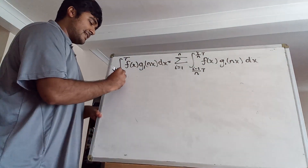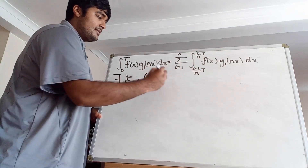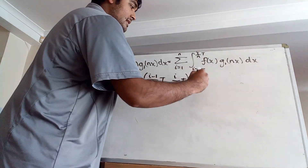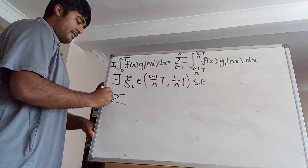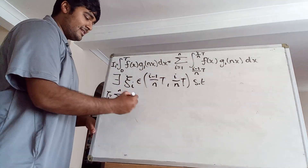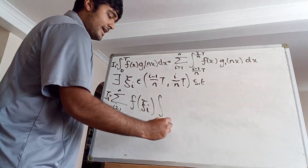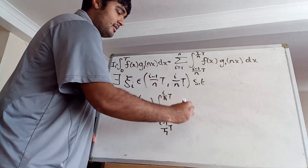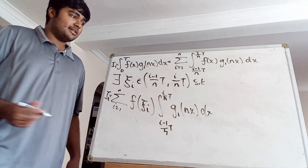Applying the mean value theorem: there exists some ψᵢ in the interval [(i−1)t/n, it/n] such that, calling this integral I1, we can pull out f(ψᵢ) to get f(ψᵢ) times the integral from (i−1)t/n to it/n of just g1(nx) dx.